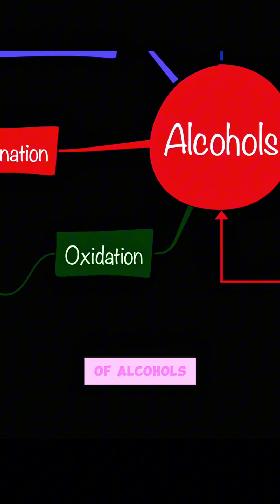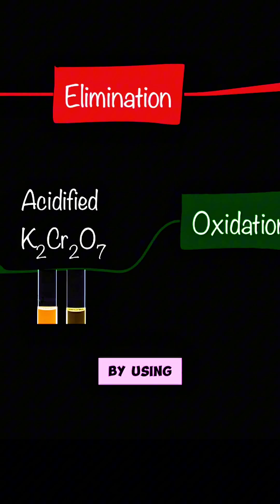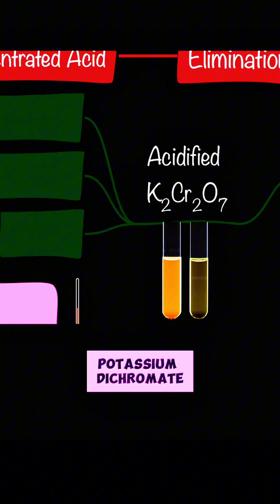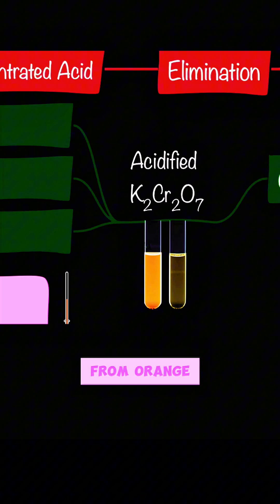The oxidation of alcohols is done by using acidified potassium dichromate, which changes its color from orange to green.